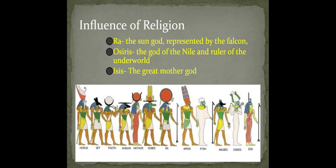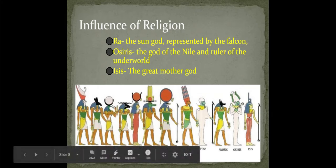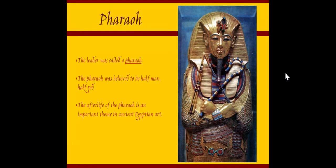Here are some examples of their gods — you have Ra, the sun god, Osiris, and Isis. We won't really have time to go into the gods, but just know that religion had a big influence on art, and you'll often see these gods in their paintings and sculptures. The leader was called a pharaoh, and the pharaoh was believed to be half man, half god. The afterlife of the pharaoh is important in ancient Egyptian art — you'll see stories of what happened in paintings and also in sculptures.